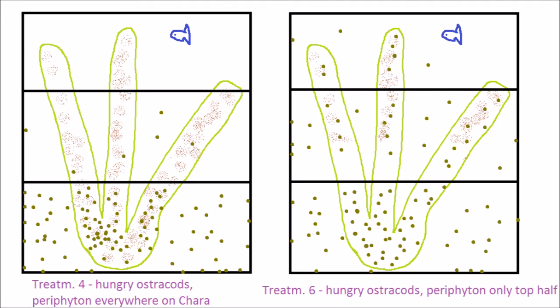The next comparison is between treatments 4 and 6. Here the ostracods are hungry, but in treatment 6, there's periphyton only on the top half of the Chara, because the experimenters cleaned it off of the bottom half. In treatment 6, the ostracods spent more time in the middle and upper zones, because even though fish cues were present, which normally would have caused the ostracods to avoid the upper zones, they were hungry and sought after the periphyton in the upper half of the Chara.